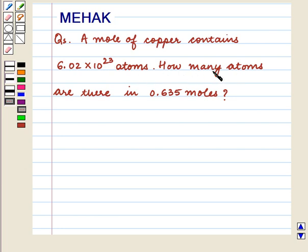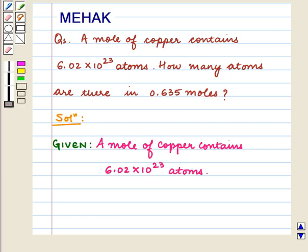How many atoms are there in 0.635 moles? We are given a mole of copper contains 6.02 × 10^23 atoms.